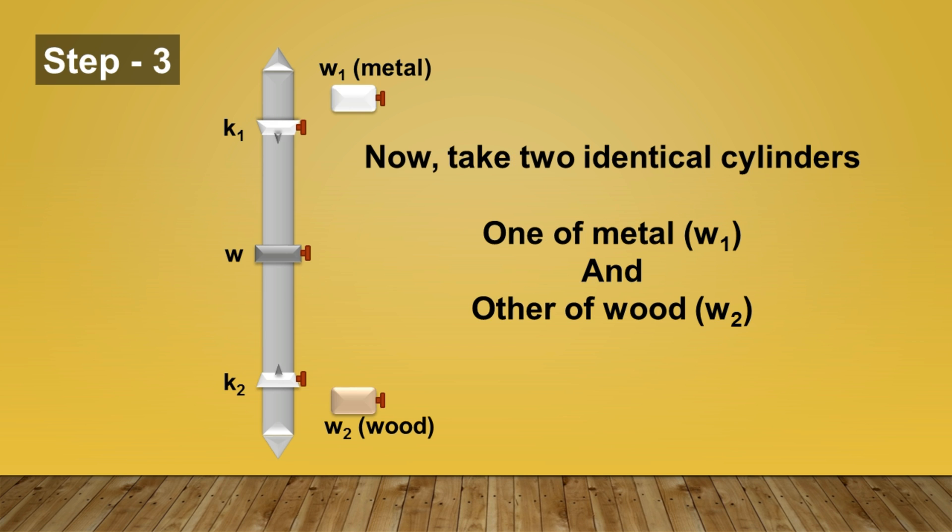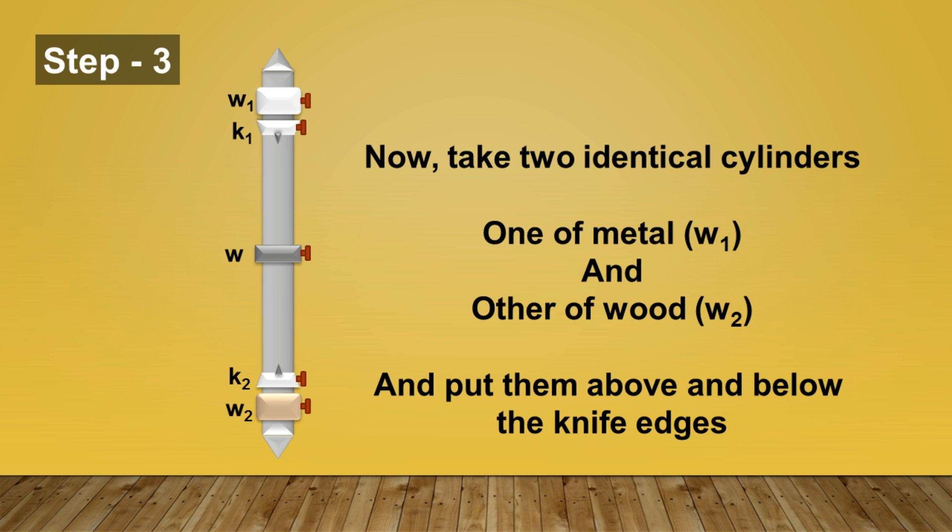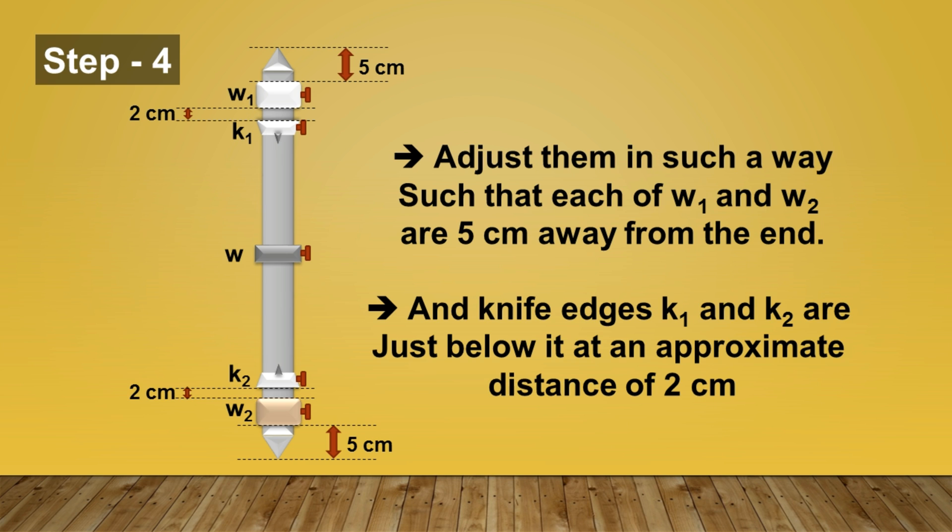Now we have moved to step 3. In this step, you have two identical cylinders. One is made up of metal and the other is made up of wood. So, you put them on the rod as well and you can see their arrangements in the figure.